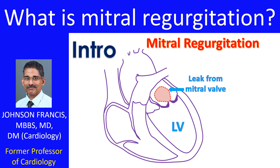Mitral regurgitation is a leak in the mitral valve between the left atrium and left ventricle. Normally, the mitral valve prevents backflow of blood from the left ventricle, the lower muscular chamber, when it contracts.